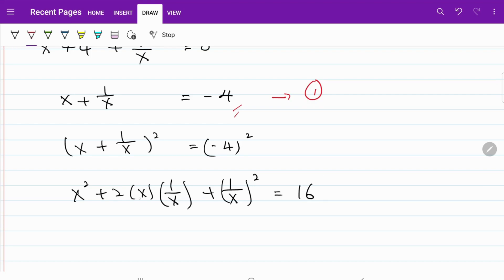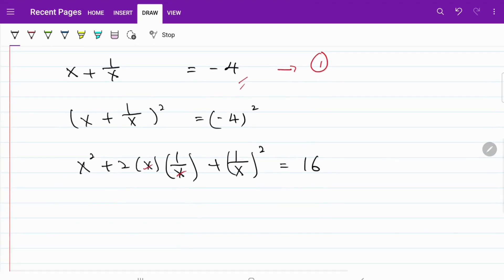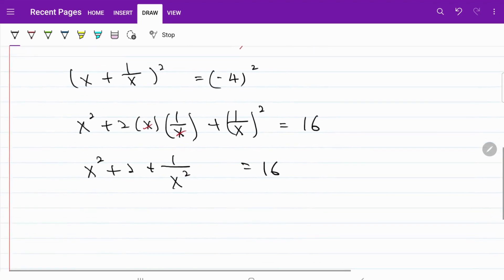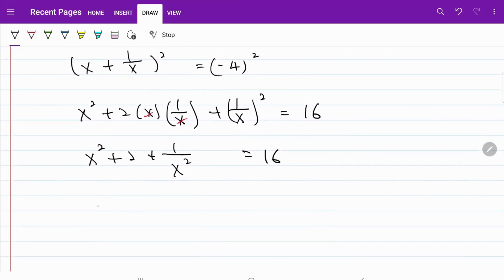We know x and x will cancel. So what I have now is x squared plus 2 plus 1 over x squared equals 16. I can simplify this further by writing it as x squared plus 1 over x squared equals 14.